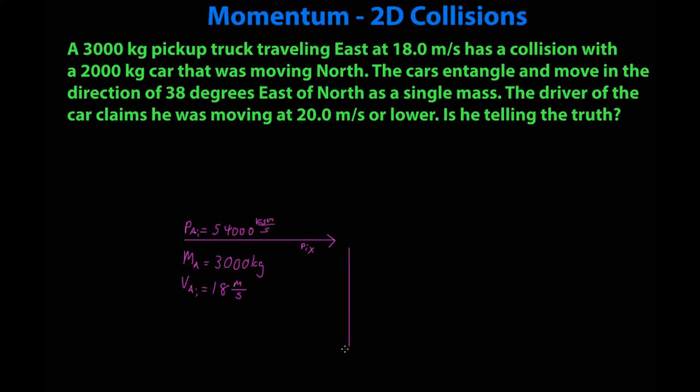This has a collision with a 2,000 kilogram car going north. Velocity b initial is unknown, is what we are looking for. He says he's going 20 meters a second but that is not confirmed so it is useless, it is definitely not a given. However, this is where the collision occurs. The cars entangle and move in direction of 38 degrees east of north. So here's north, 38 degrees east of north is approximately here where this is 38 degrees. The combined mass is 5,000 kilograms. And right now this is all we know.